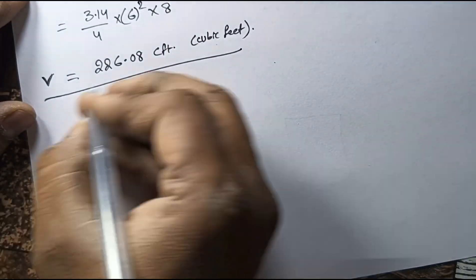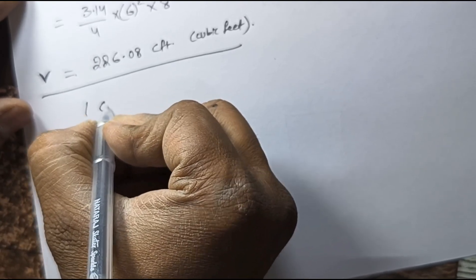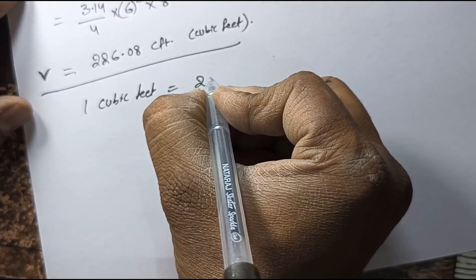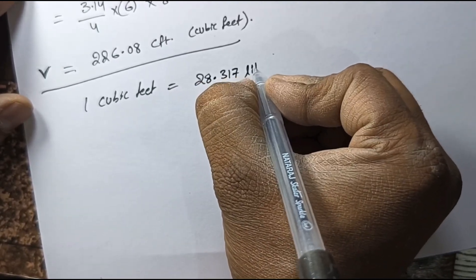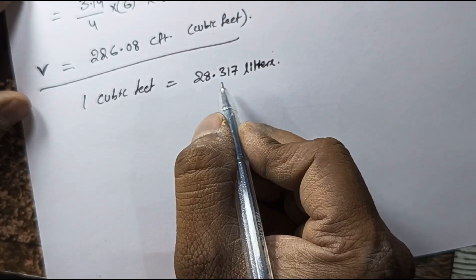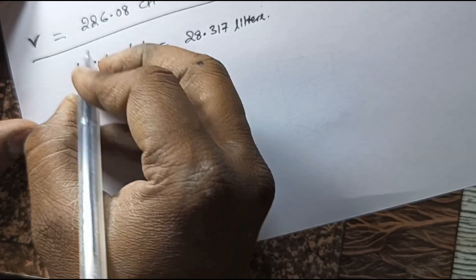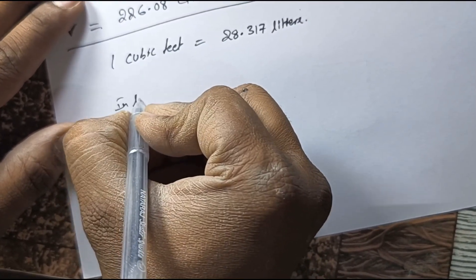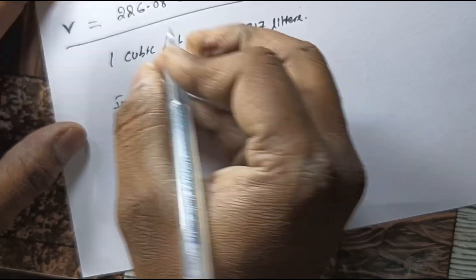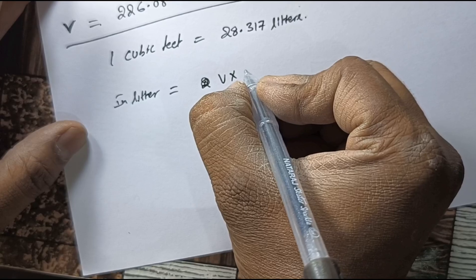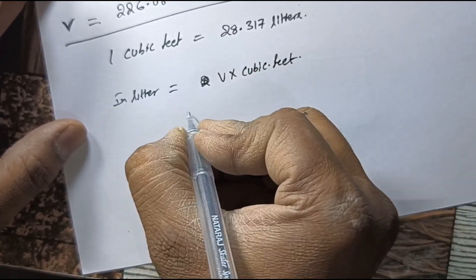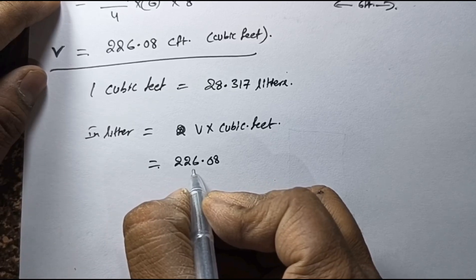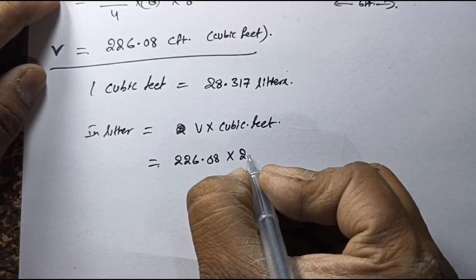Now we will find the water tank capacity in liters. One cubic foot is equal to 28.317 liters. To calculate in liters, we multiply the volume by 28.317. So: liters = 226.08 × 28.317.